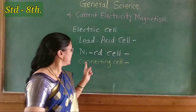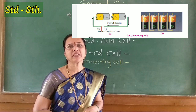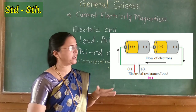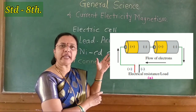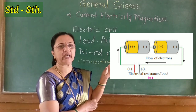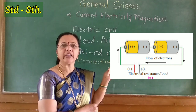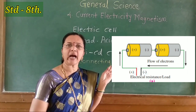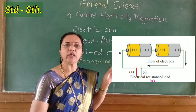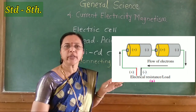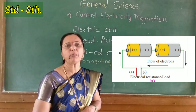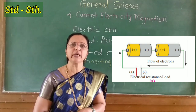Next point is connecting cells. You must have seen that more than one electric cell can be connected in an electrical circuit — look at figure 4.5a. In a transistor radio, 2 to 3 dry cells are connected in series. The principle of doing this is to obtain more potential difference than that of a single cell.